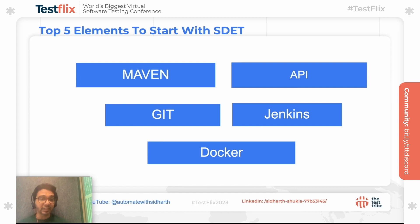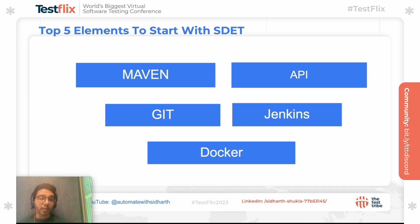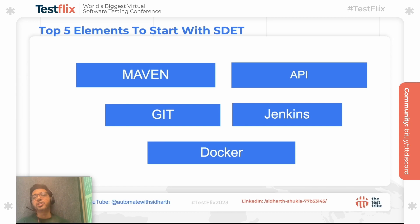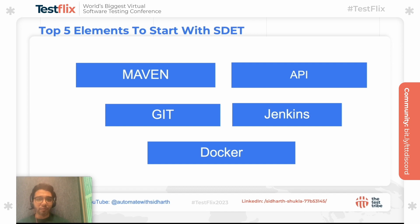Fifth is Docker, which is very important as an SDET because you need to manage the test environment. You may also need to contribute to Dockerfile creation, and if there are any deployment failures you need to go and fix them. In many organizations there is no dedicated DevOps person, so you should pitch in and act as one — fix issues, create environments so the dev team can test and then QA can follow.